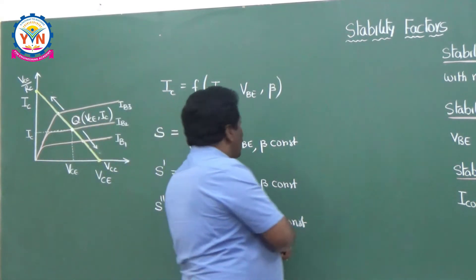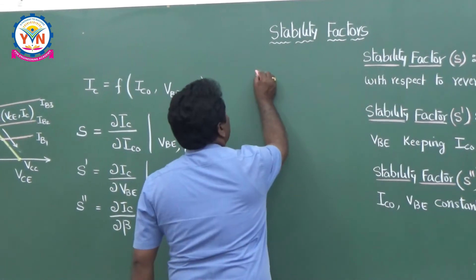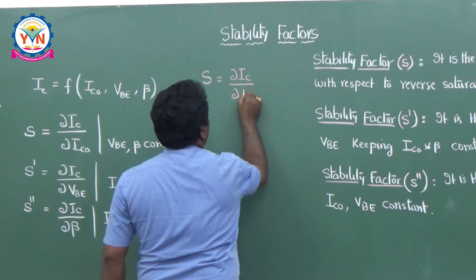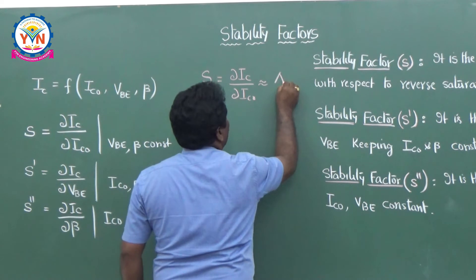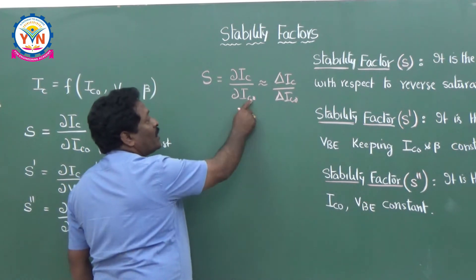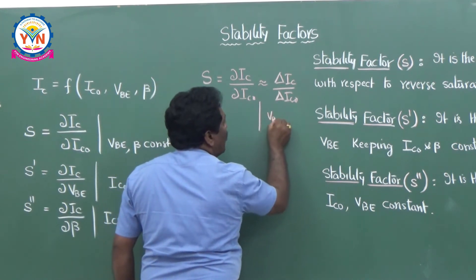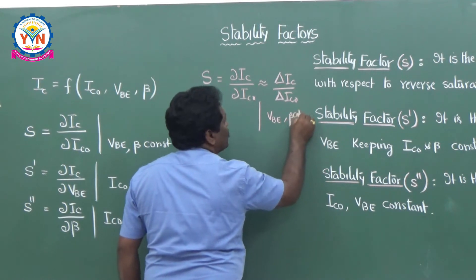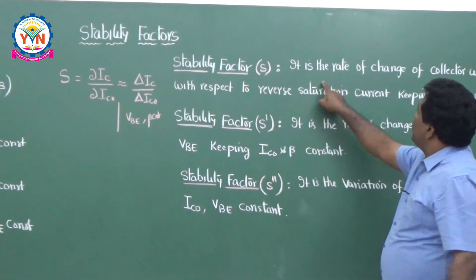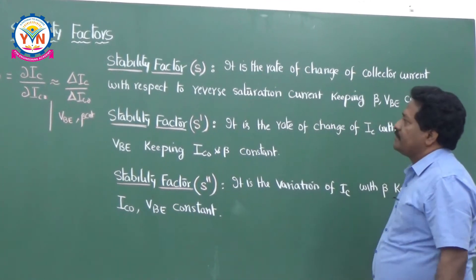In word statement form: stability factor S = ∂IC/∂IC0, which is approximately equal to ΔIC/ΔIC0, with VBE and beta held constant. So S is the rate of change of collector current with respect to the reverse leakage current, keeping beta and VBE constant.